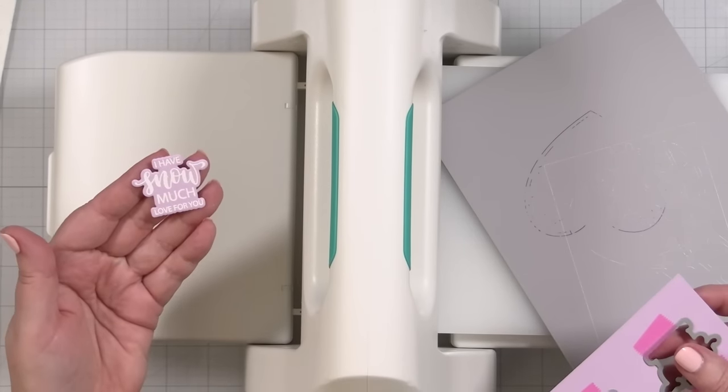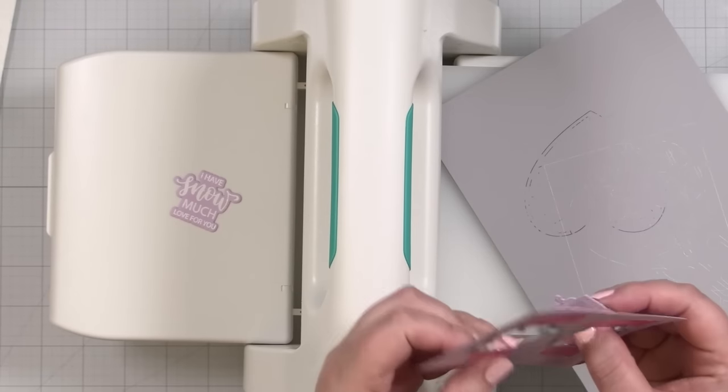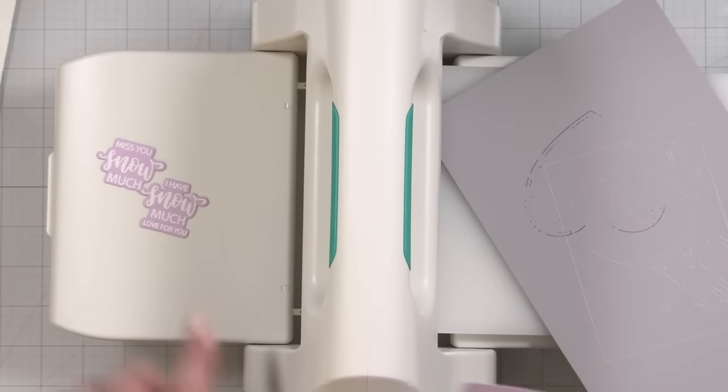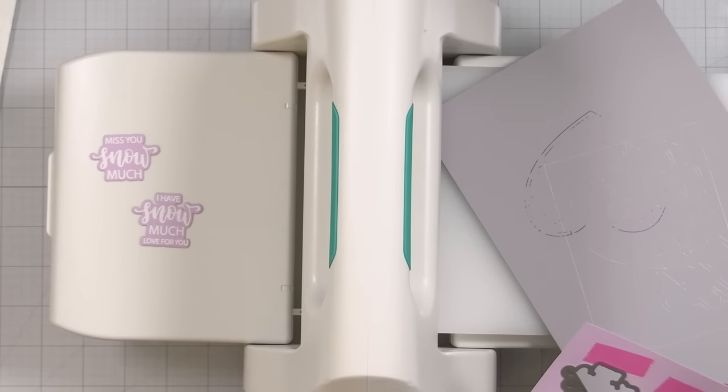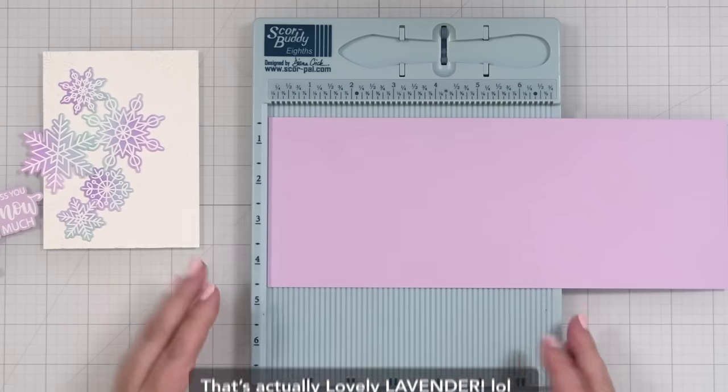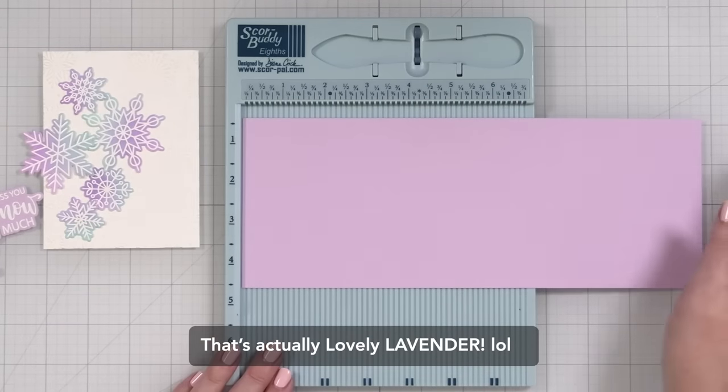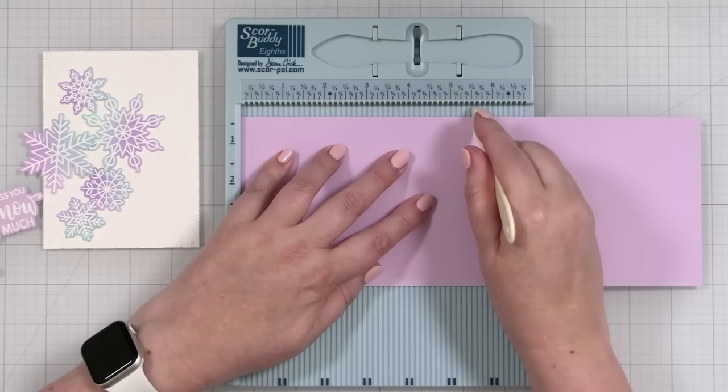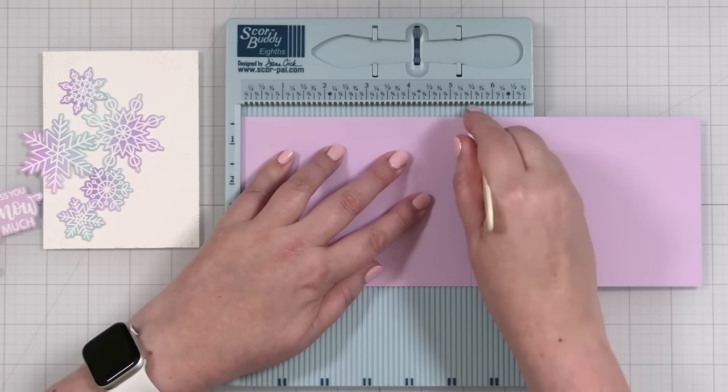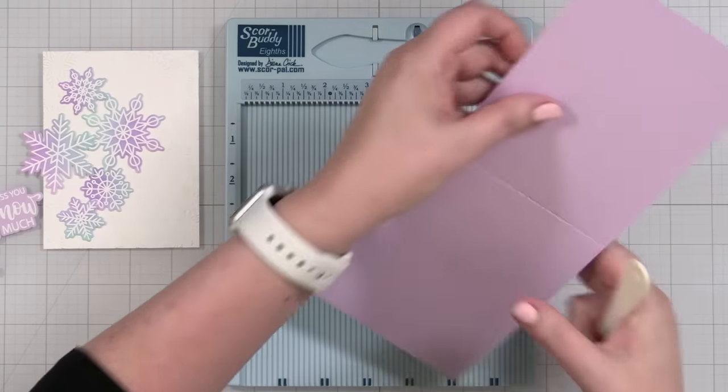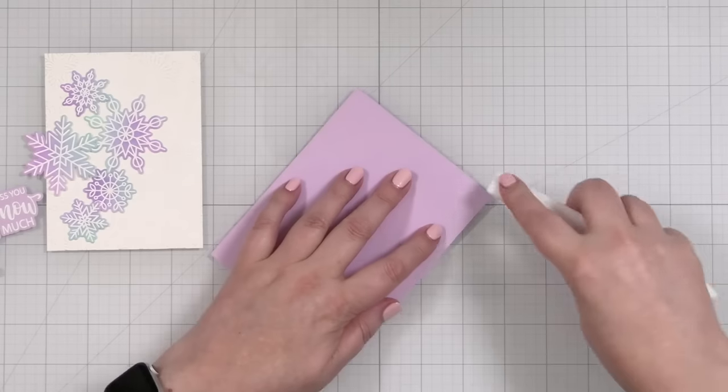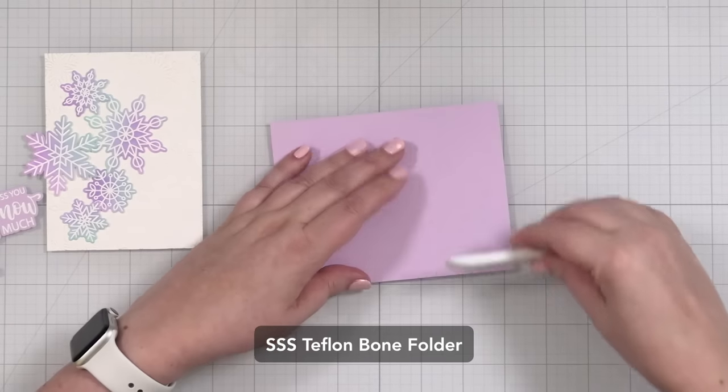I have snow much love for you or I miss you snow much. I don't know which one I'll do, but I think I'm going to cut. Maybe I'll cut an extra layer for both of those. I've got a piece of lovely lilac in 11 inches by four and a quarter. And I'm going to score this right at five and a half. Get that nice little score line in there. And that's going to be my note card. And give this a press with my Teflon bone folder.